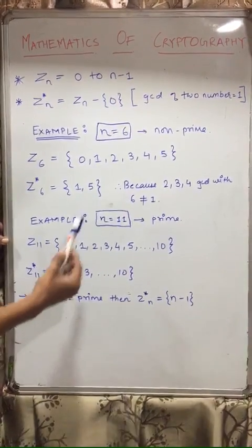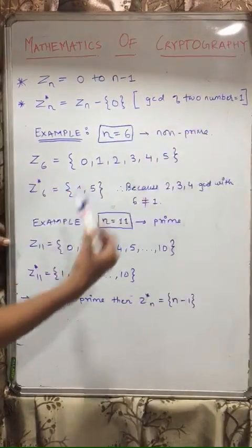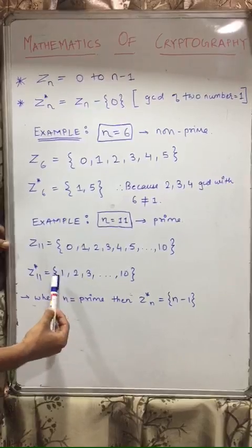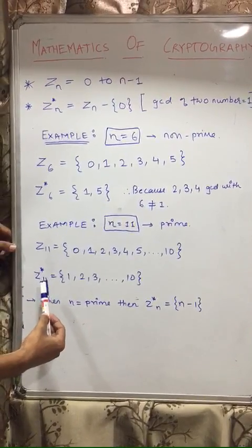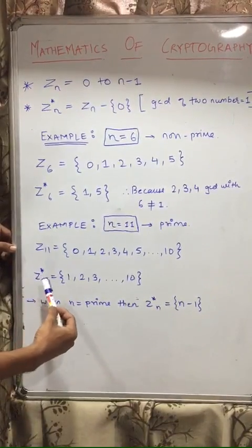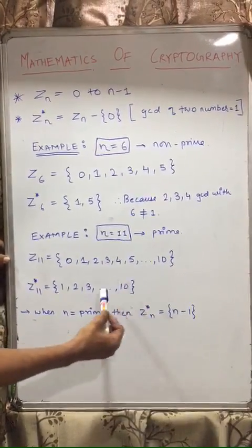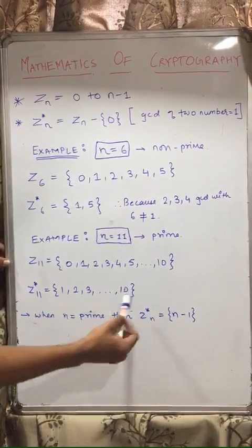And Z star 11 will be the gcd of two numbers, as I said. So 11 and 1, gcd will be equal to 1. As 11 is a prime number, so all the numbers except 11 will be included in the Z star section. So 1, 2, 3, 4, till 10.